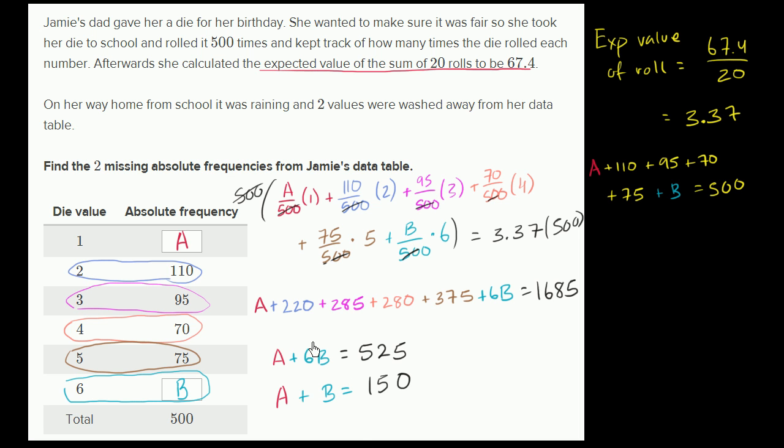And now we have a system of two equations and two unknowns, and so we know how to solve those. We could do it by substitution, or we could subtract the second equation from the first. So let's do that. Let's subtract the left-hand side of this equation from that. So, or essentially we could multiply this one times a negative one, and then add these two equations. The A's are going to cancel out, and we are going to be left with 6B minus B is 5B, is equal to 375.